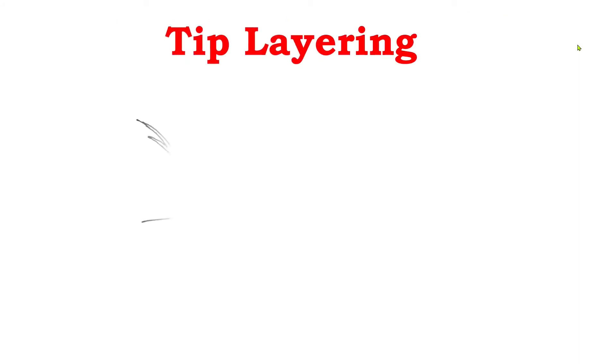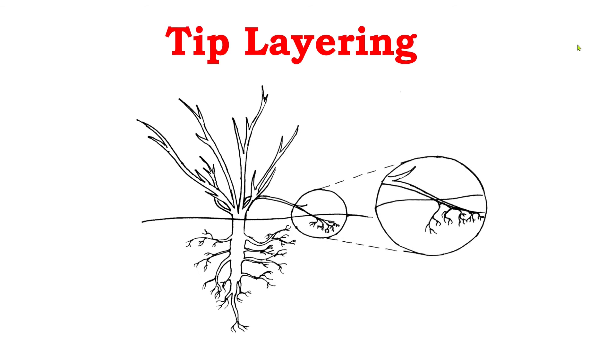This is tip layering. What is it? How is it done? It is one of the methods of layering in which the plant is propagated by bending a stem to the ground and covering five to eight centimeters of the tip with soil so that roots and new shoots develop from it.